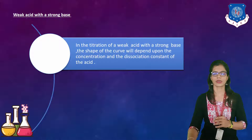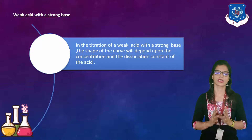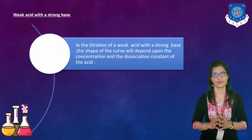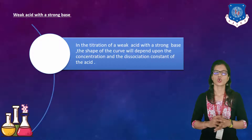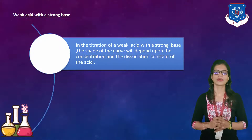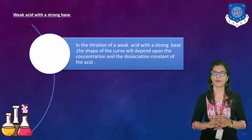Our next point is the application in weak acid versus strong base titration — how conductometric titration plays an important role in weak acid with strong base titration. In the titration of a weak acid with a strong base, the shape of the curve will depend upon the concentration and the dissociation constant of the acid.